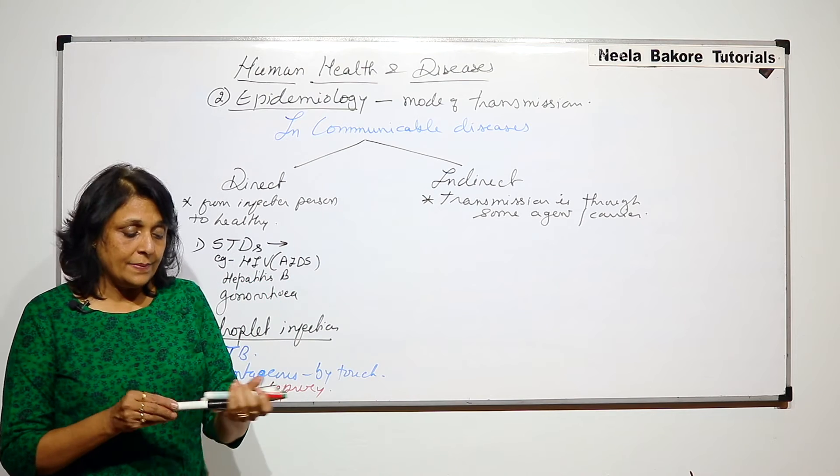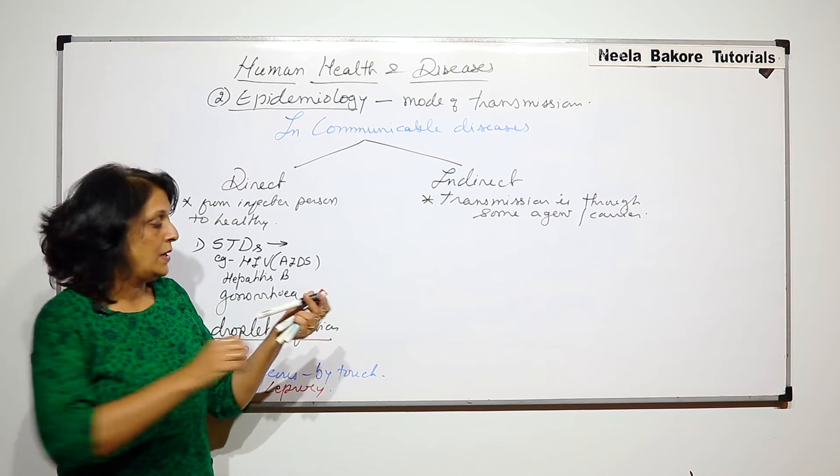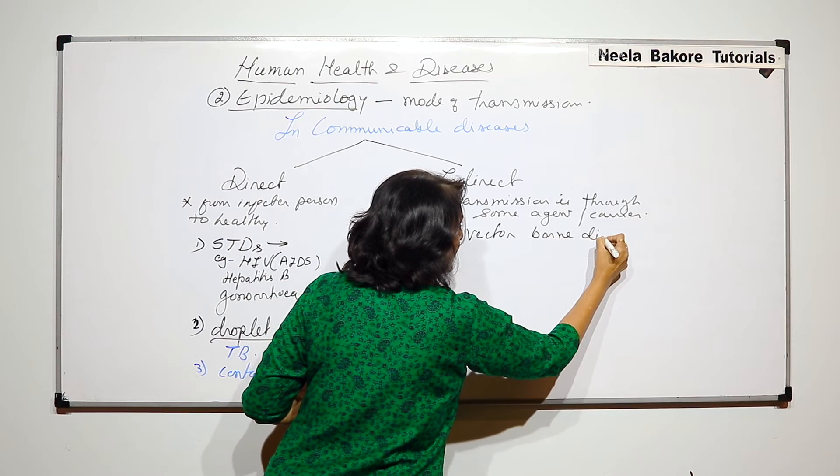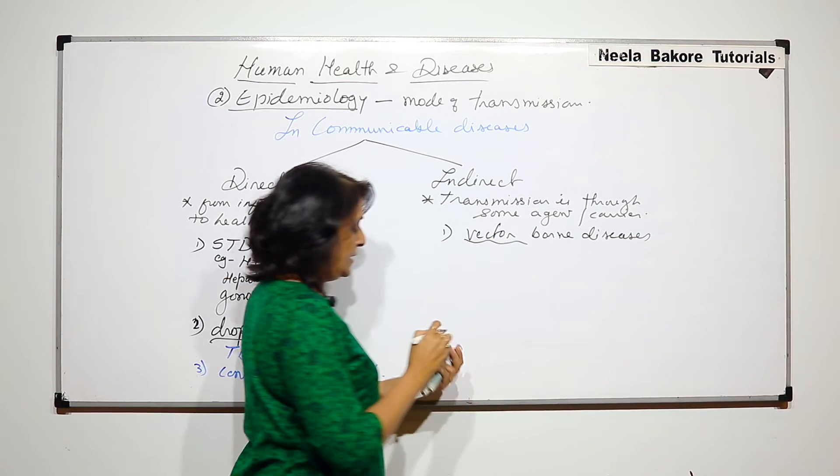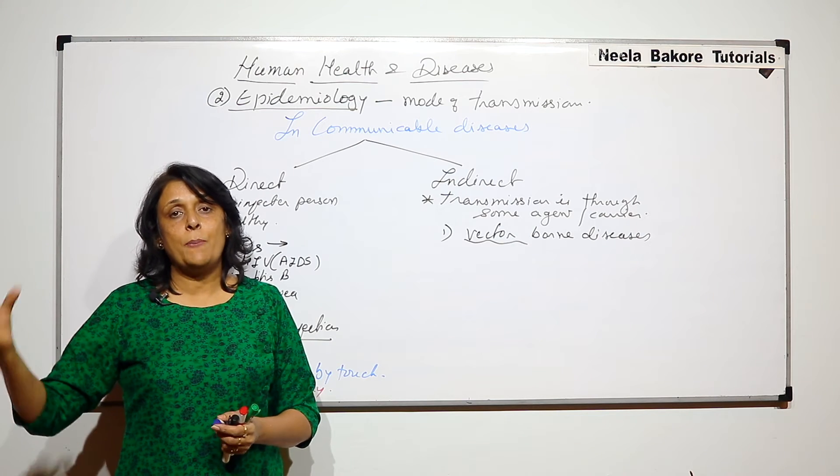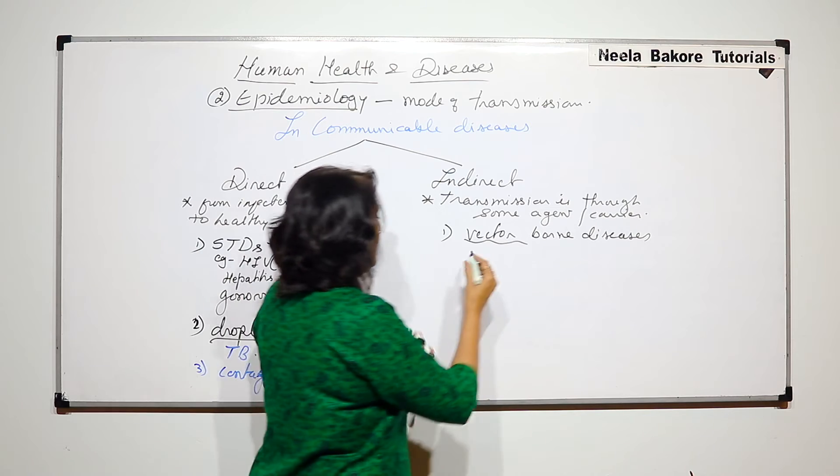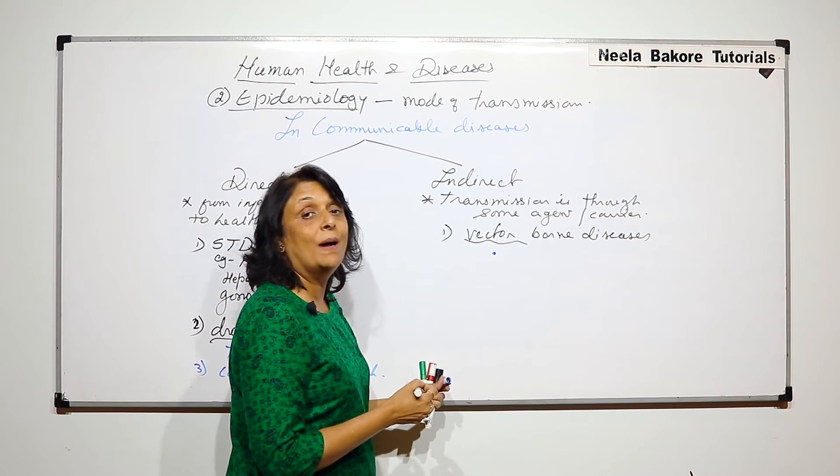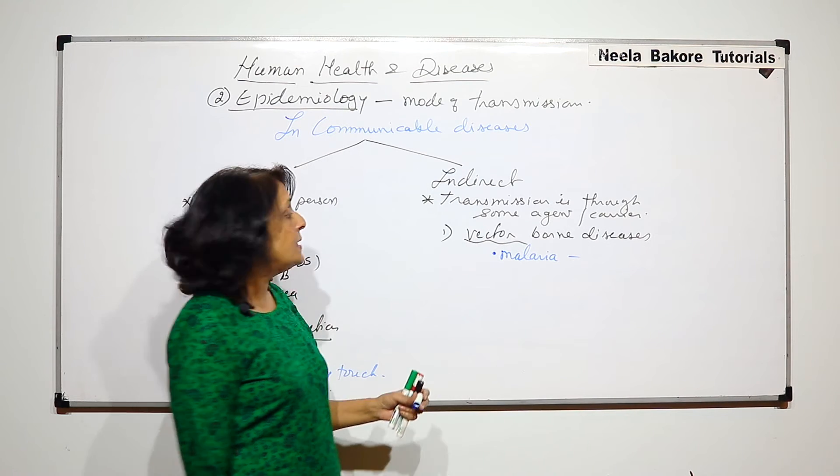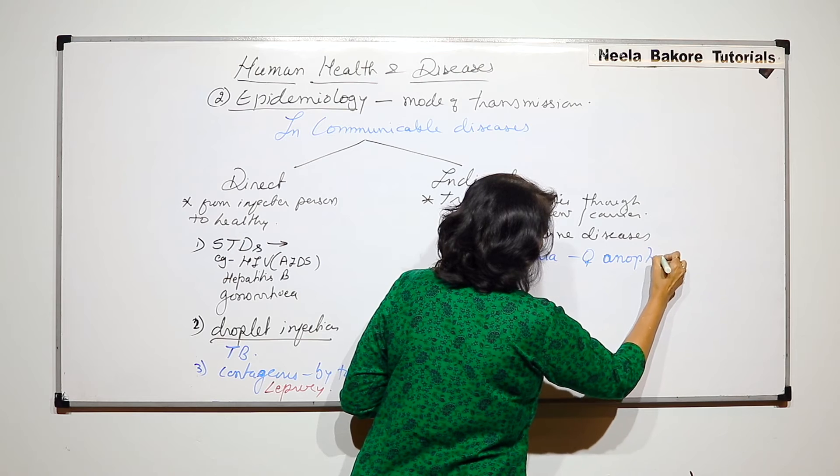What is going to be indirect? From the infected person to healthy but there has to be a carrier. So one such is vector-borne. Vector-borne diseases. Vectors are organisms who take the particular pathogen from the infected and bring it to the body of the normal. And you know some examples like malaria. The vector is female Anopheles mosquito.